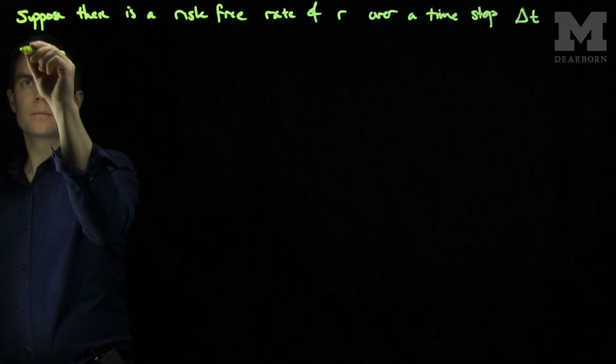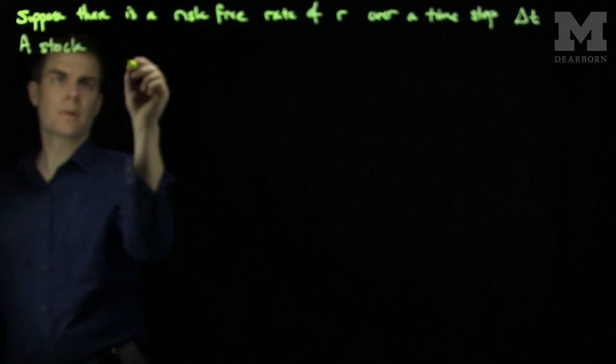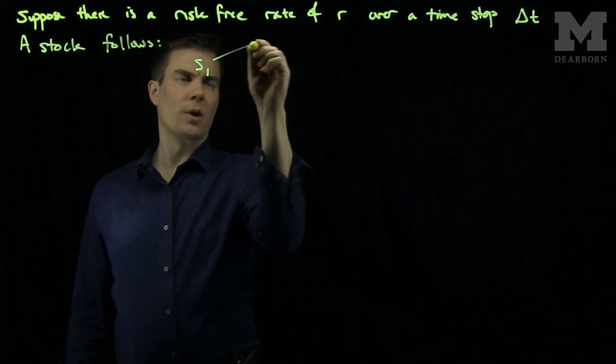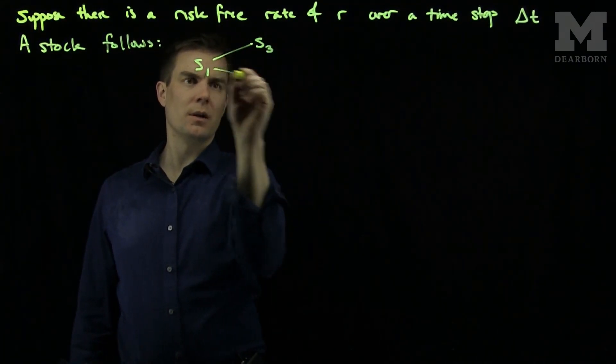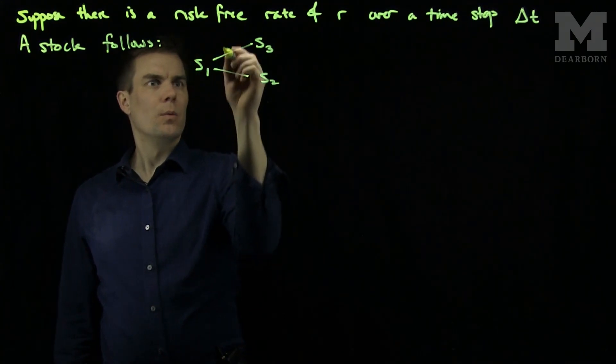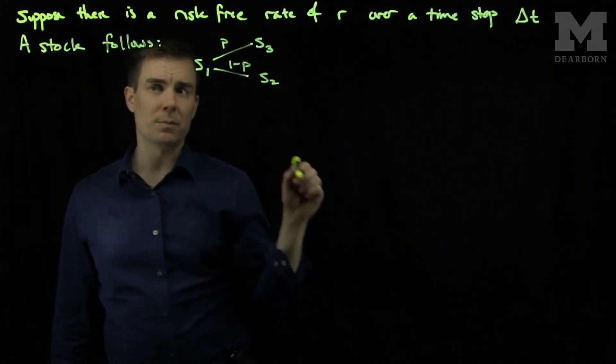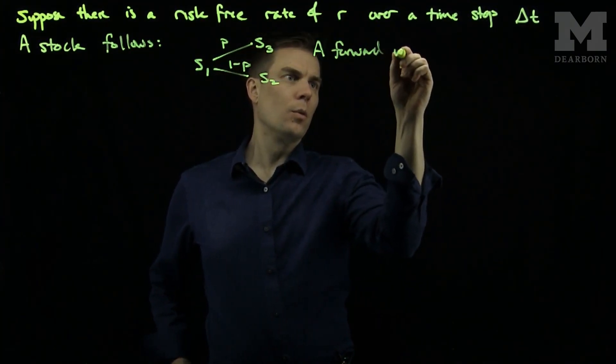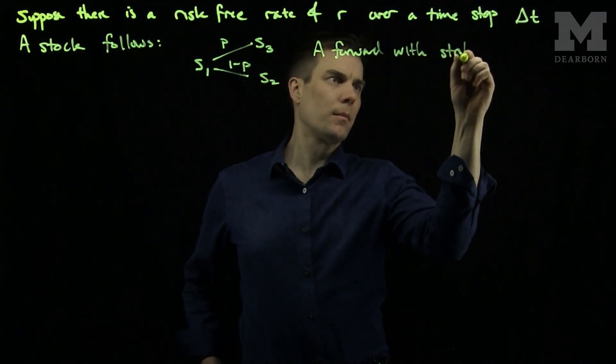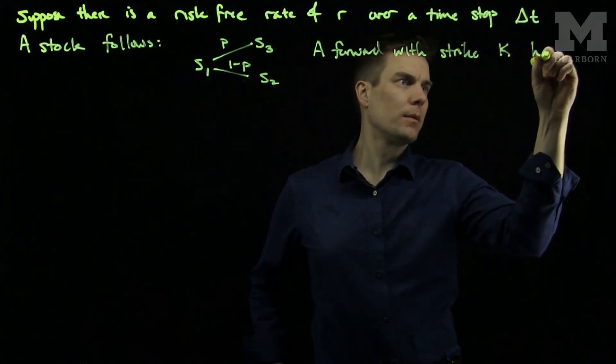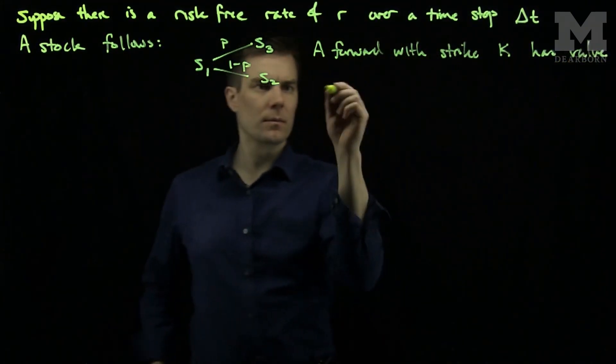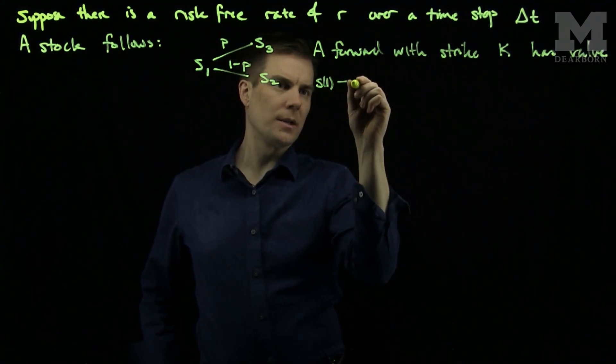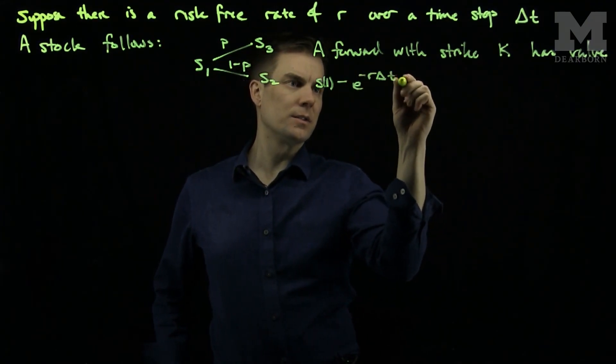The stock follows the return tree. It can go from S1 to S3 or S2 with probability P and 1 minus P. Then a forward with strike K has value S1 minus E to the minus R delta T K.